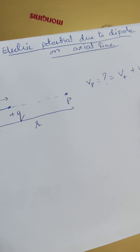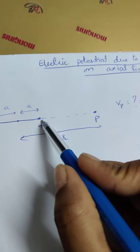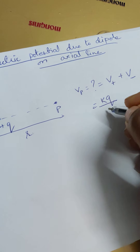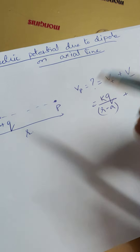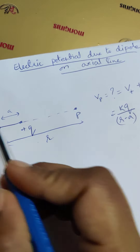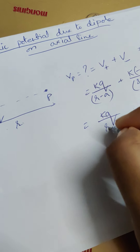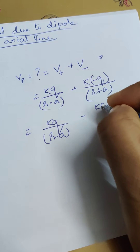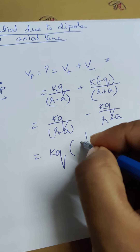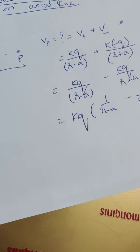The potential due to the positive charge is kq divided by the distance from the positive charge to P, which is r minus a. The potential due to the negative charge is k(−q) divided by r plus a. So combining: Vp = kq/(r−a) − kq/(r+a). Taking kq common gives kq times [1/(r−a) − 1/(r+a)].